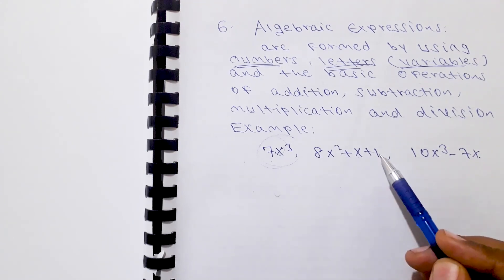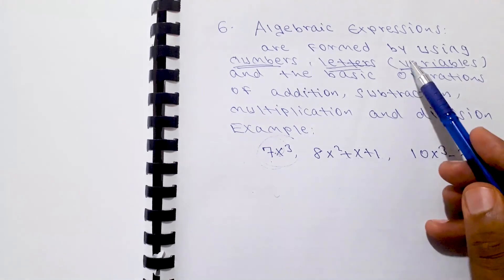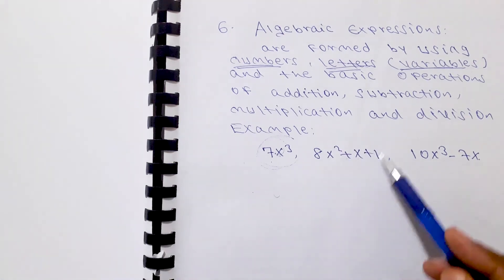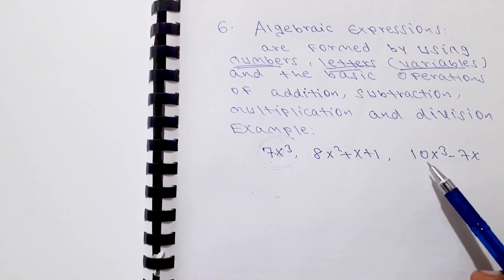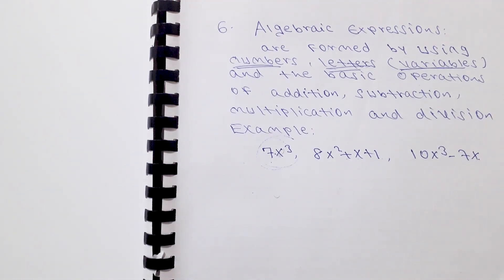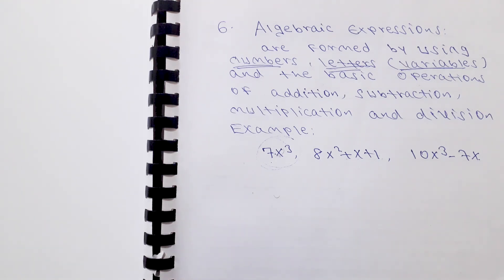Numbers, variables, and operations like plus and minus are used to build algebraic expressions. For example, 10 times x cubed minus 7x is an algebraic expression. A mathematical expression using variables and basic operations is an algebraic expression.